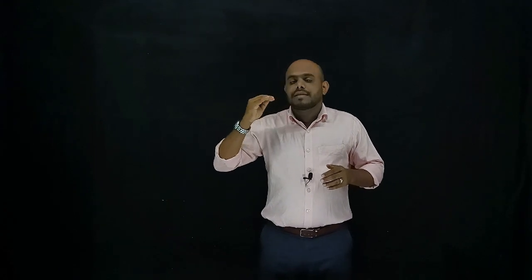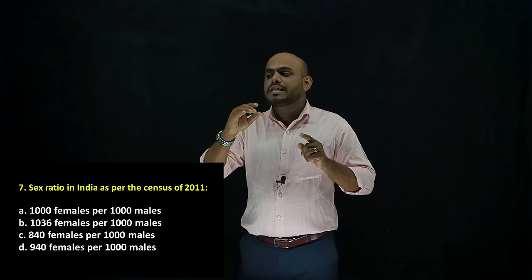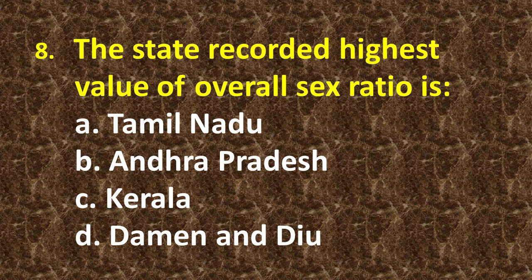Seventh question is related to Census 2011. Sex ratio in India as per Census 2011 — sex ratio means the number of females per thousand males. The right option is D: 940 females per thousand males as per the 2011 census.